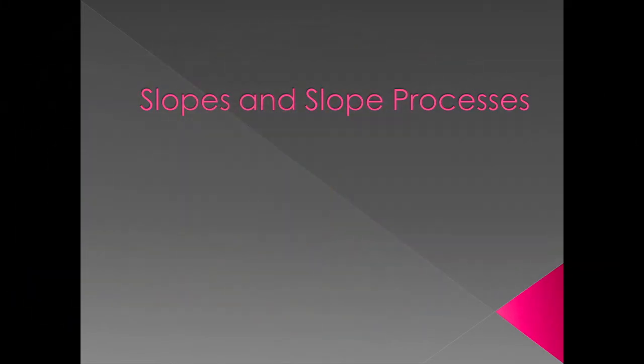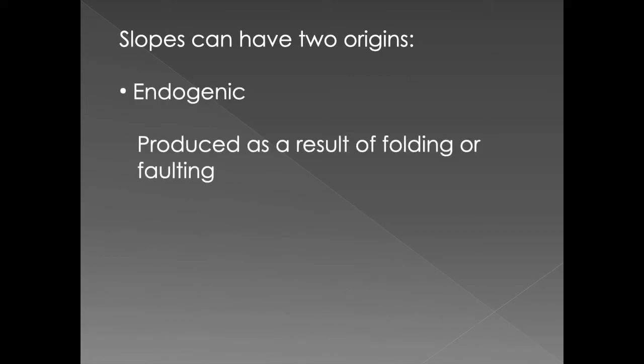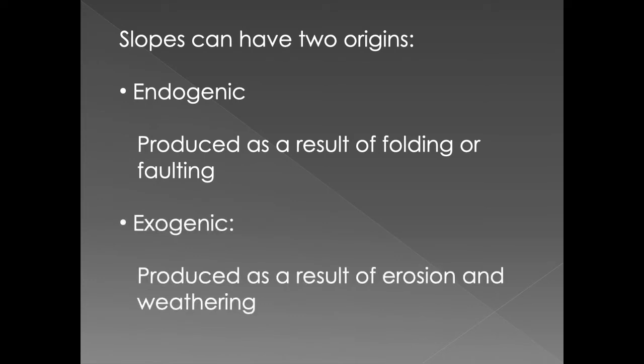Let us now look at the slopes and slope processes, and what happens along slope processes. A lot of these processes and movements occur because of gravity. Let's look at slopes and what are the origins of slopes. Slopes can be endogenic, produced by folding or faulting, or they can be exogenic, produced as a result of erosion and weathering.